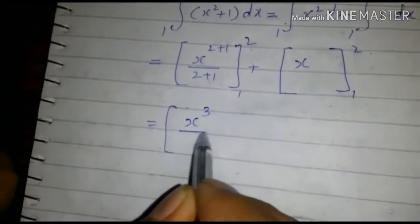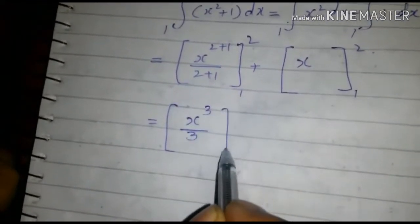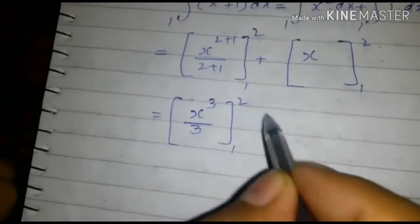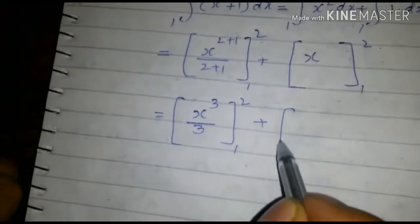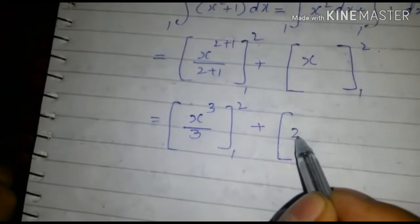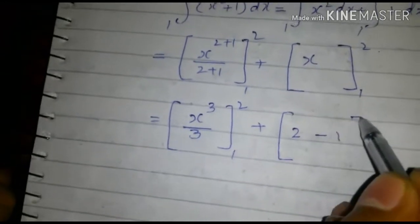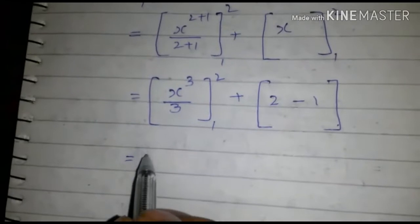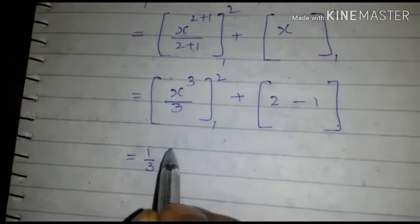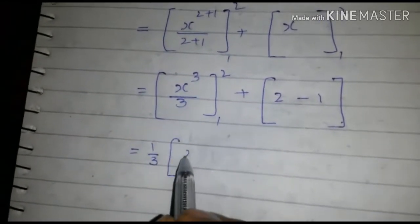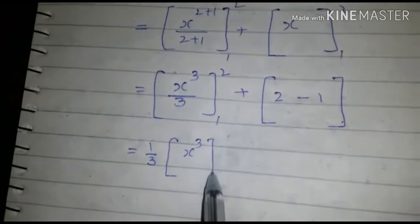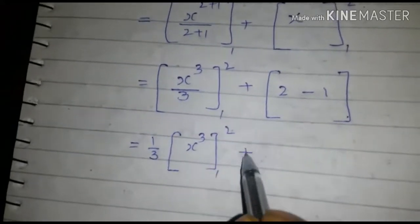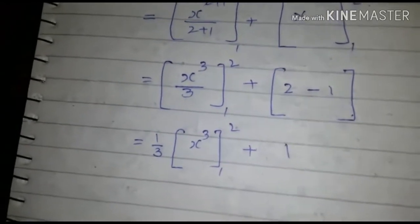x cubed over 3, 1 to 2, 2 minus 1. 1 over 3 into x cubed 1 to 2 plus 1.